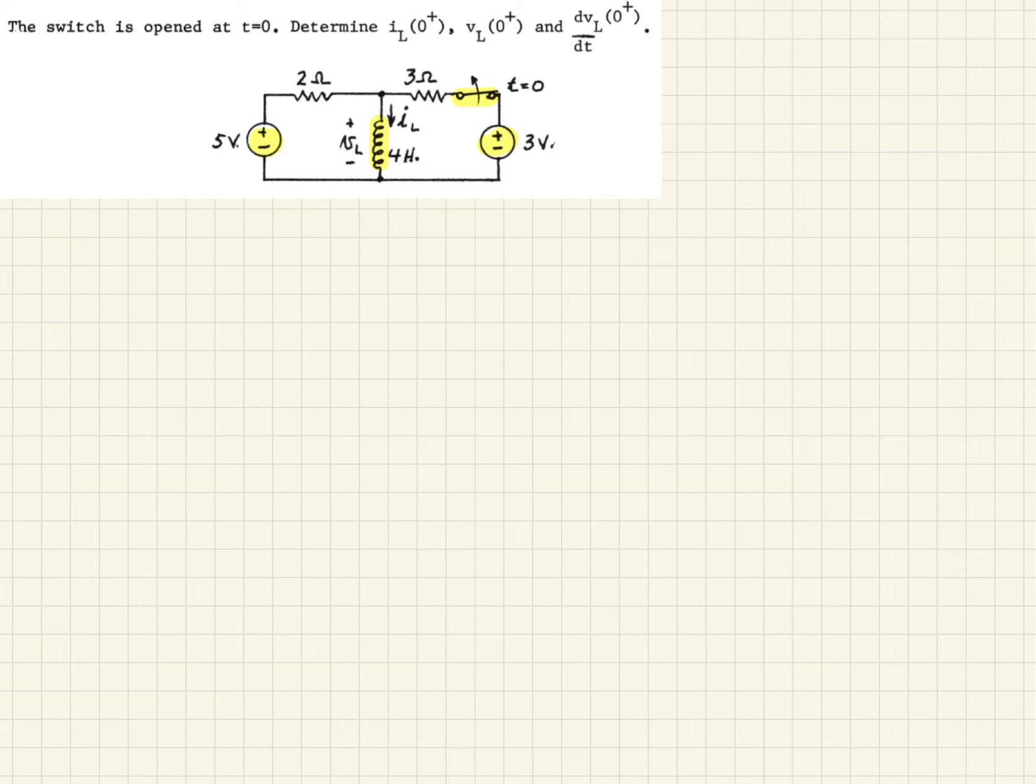And so then at T equals 0, the switch is opened. They're wanting us to determine at that instant what is the current and the voltage across the inductor, and an expression for the change in voltage with respect to time at the moment the switch opens.